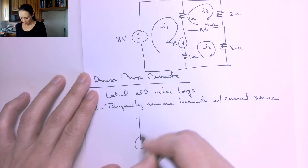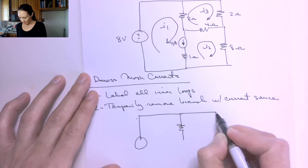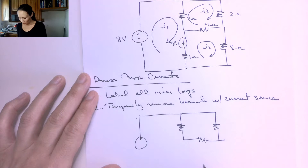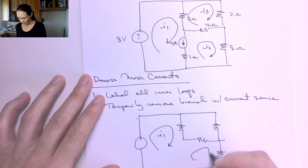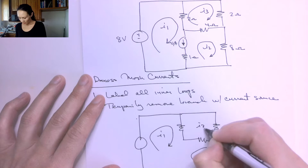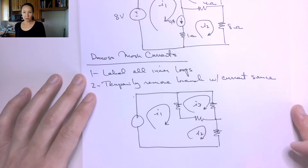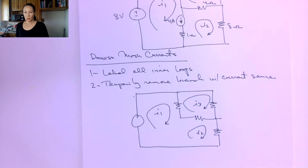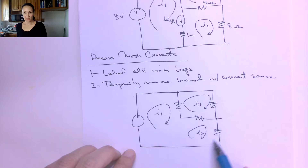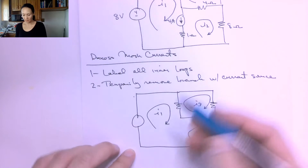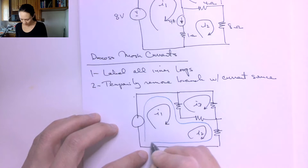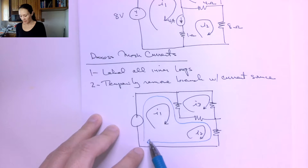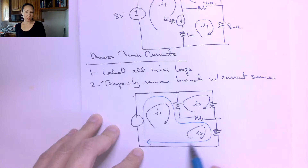When we do that, we're left with this circuit that has basically two loops, but one of those loops is like a super loop. We're still going to keep I1, I2, and I3 in our circuit, but when we make our equations, we're going to treat this loop — created by removing that branch — as one big loop. I drew it in blue: it's the combination of both the I1 and the I2 loops.